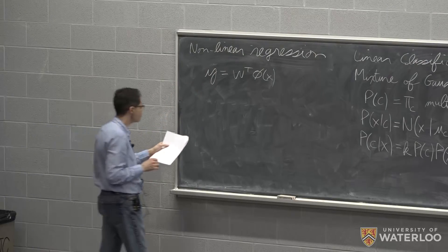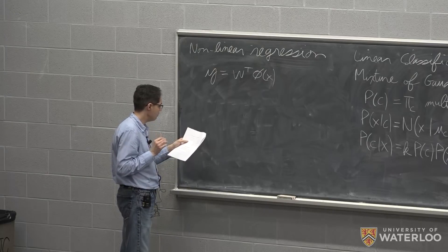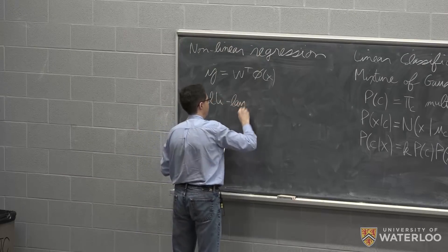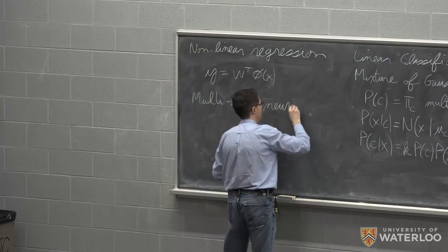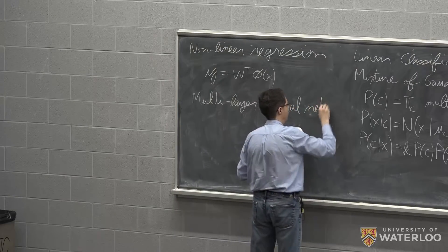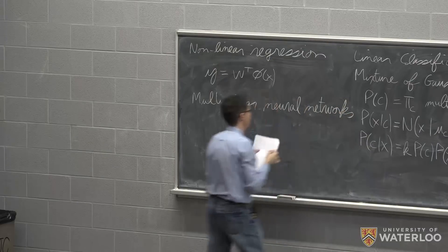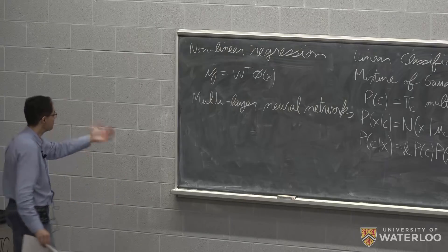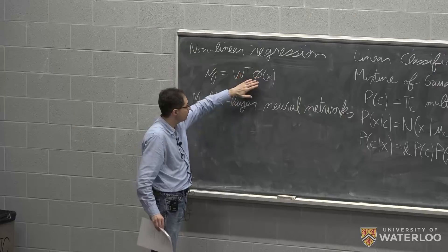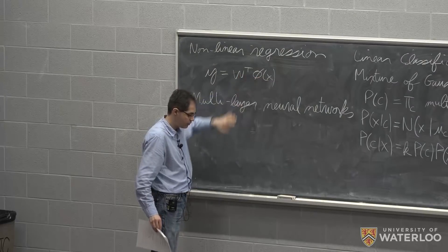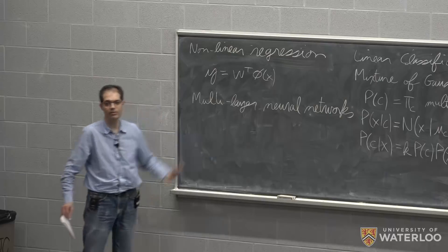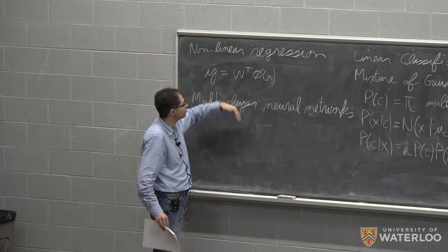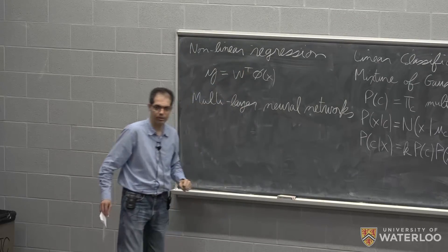We're also about to talk about multilayer neural networks. Instead of having to assume a certain set of basis functions, we're going to have adaptive basis functions. We can relate those multilayer neural networks to this form of generalized linear regression.